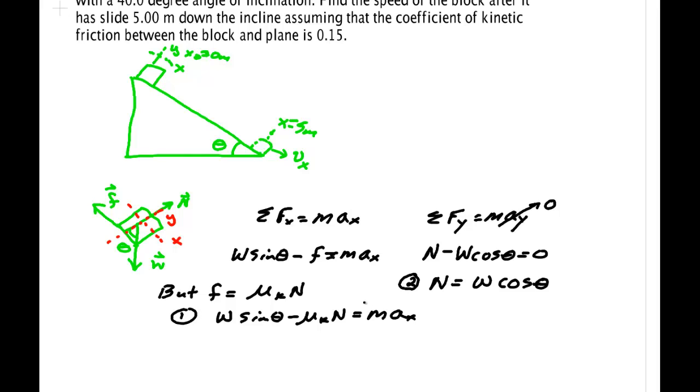Now what I want to do is sub 2 into 1. So substituting equation 2 I have weight sine theta minus mu k weight cosine theta is equal to m a x.